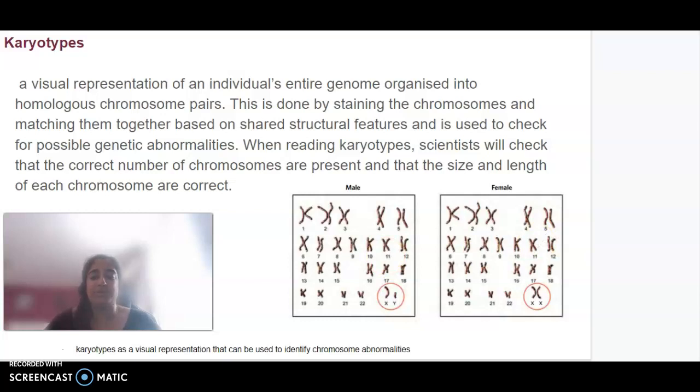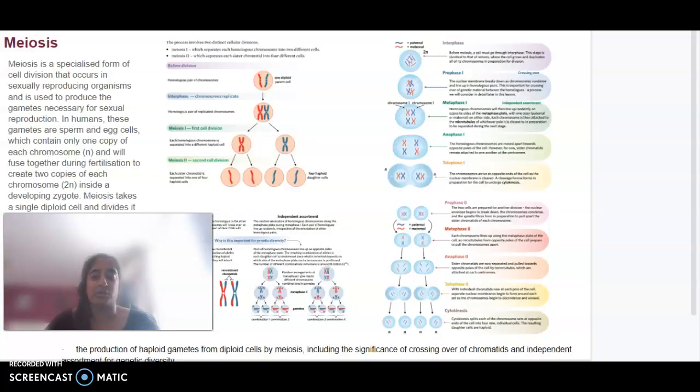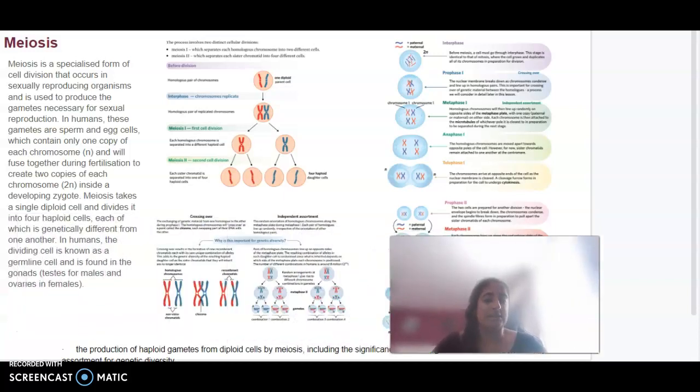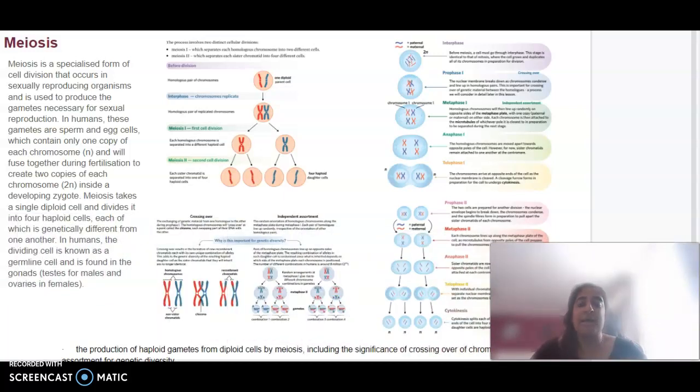One process we're going to look at is called meiosis. This is something you've all seen in class, but it's a summary of what this process entails. Meiosis is the process where we are creating haploid gametes - our sex chromosomes are involved here where we are creating sperm or egg - and they're going to have 23 chromosomes in each of those daughter cells that are created.